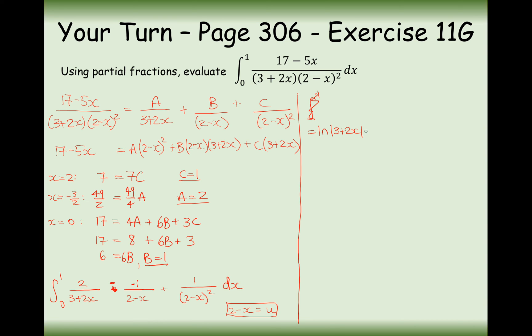And on the last term, integrating 1 over (2 minus x) squared quickly gives minus 1 over (2 minus x).